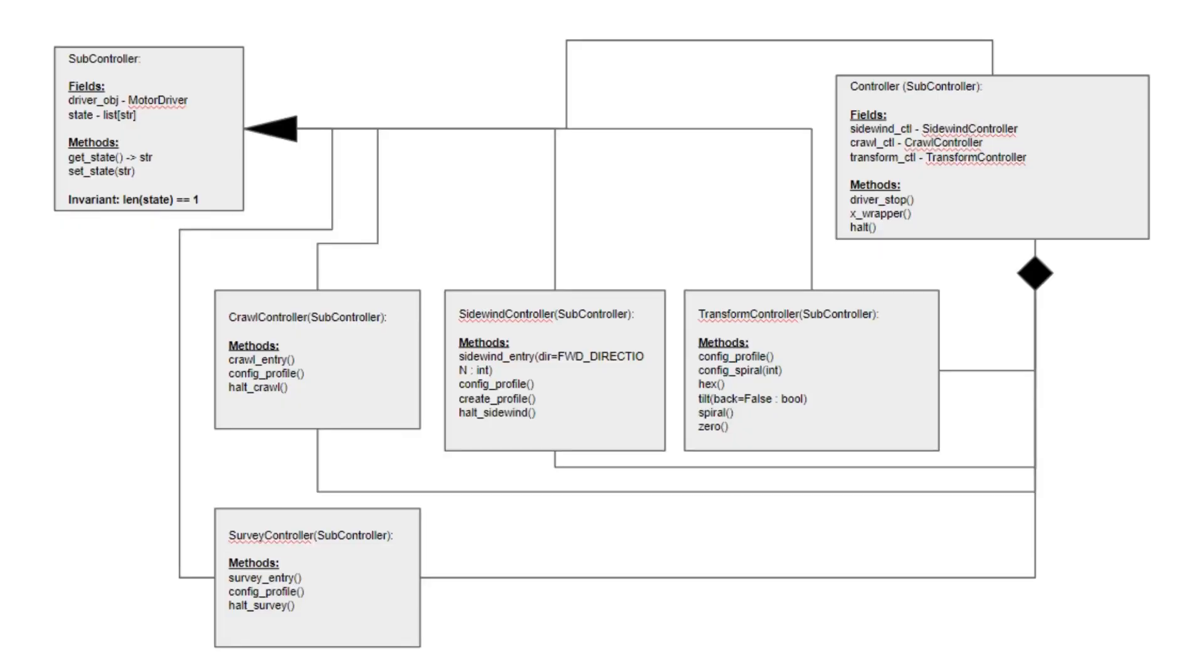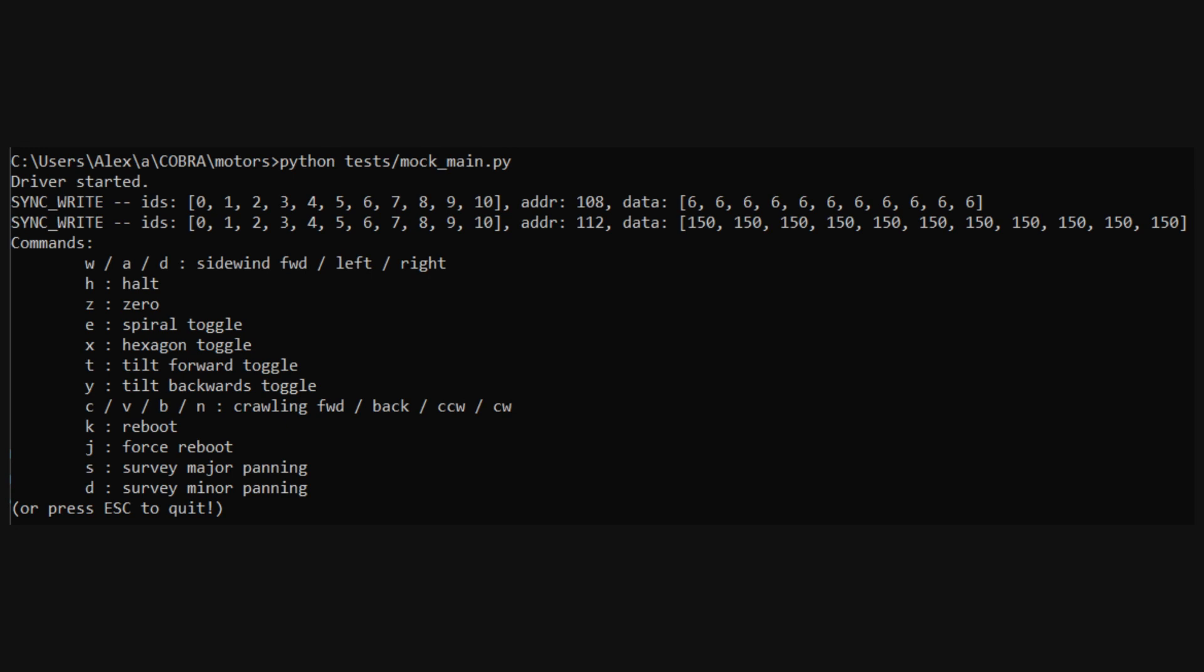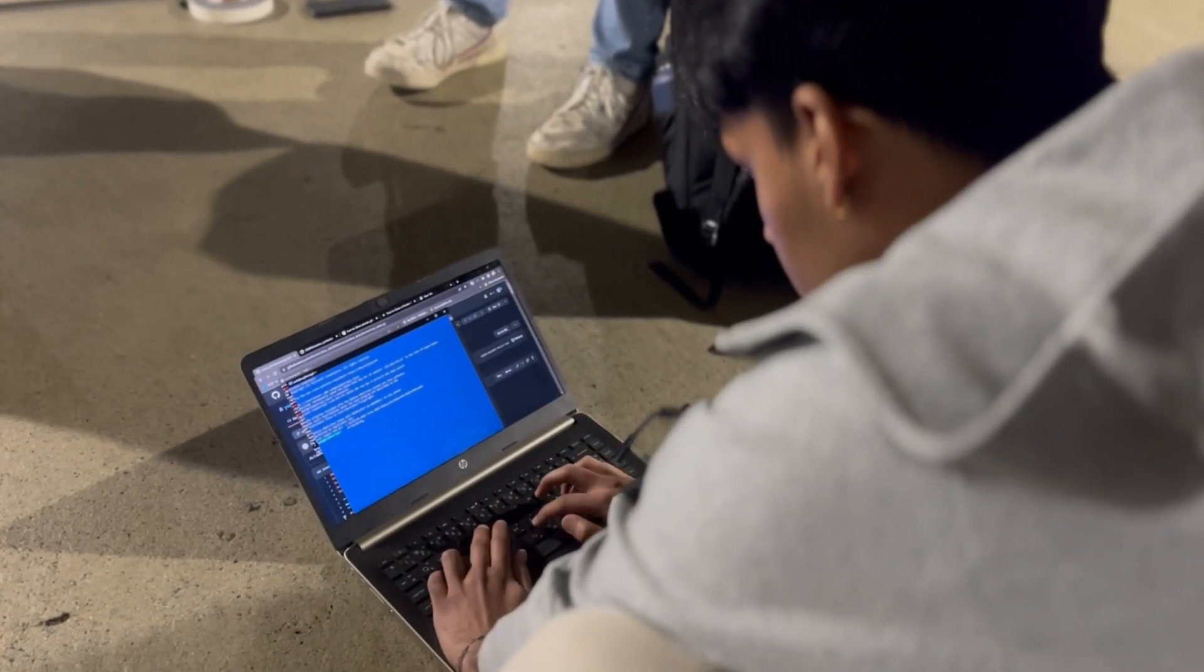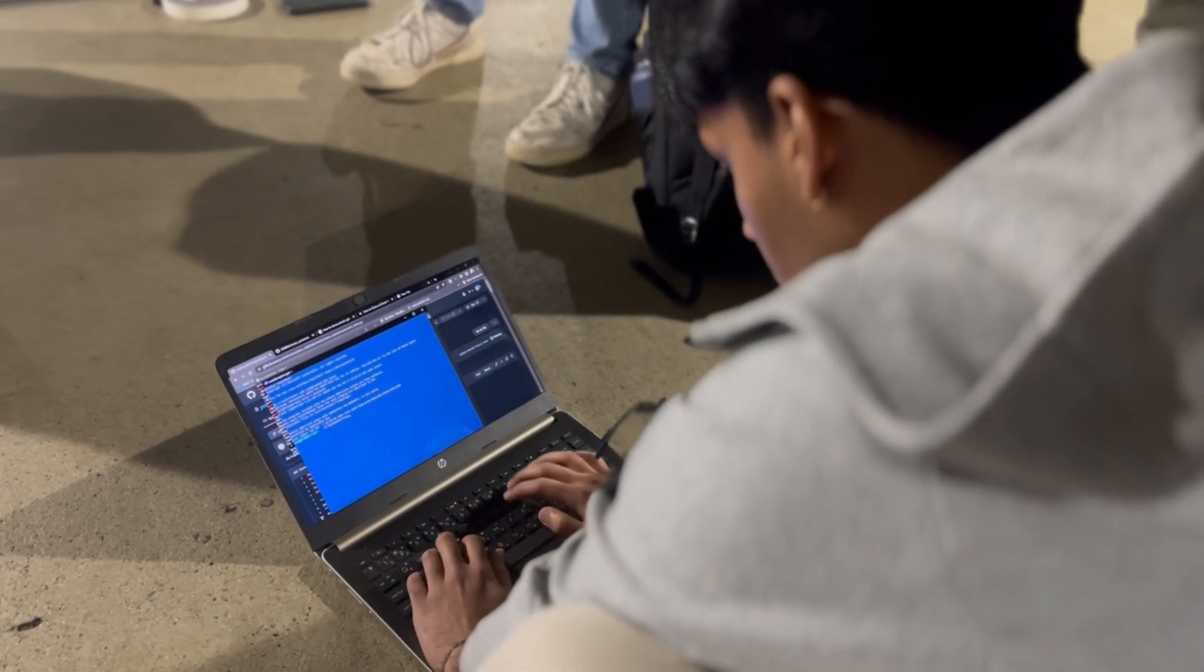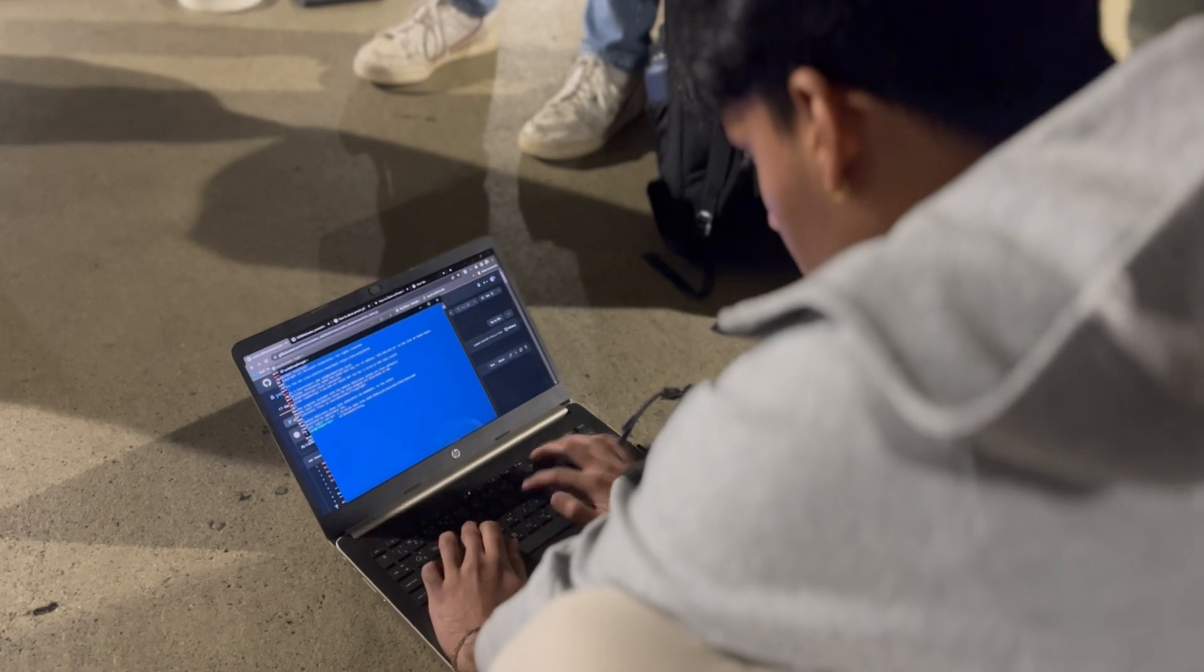Our software suite contains a set of driver and controller classes to encapsulate movements like sidewinding, halting, and transformations. We also have a text-based interface to control the snake through a remote device. For integration testing, our team developed mock classes which not only were crucial for team members working remotely, but also helped us identify potentially hardware-breaking bugs without risking damage to the physical prototype.